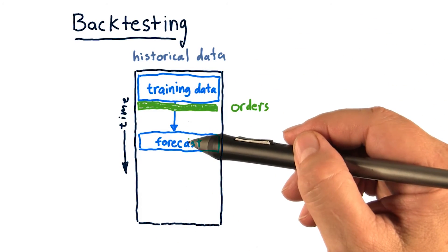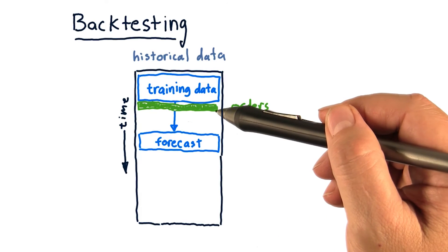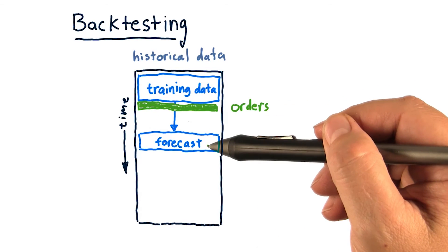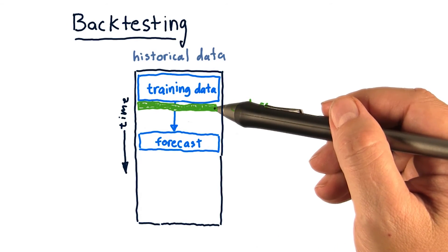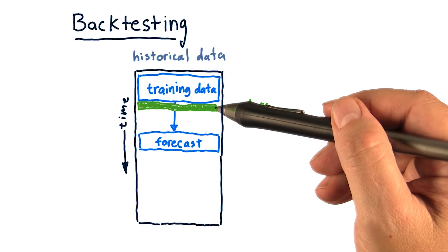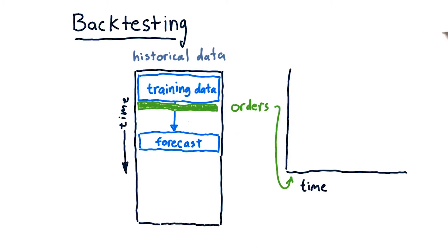On the basis of that forecast, we can then now place orders anticipating that that forecast will be achieved. So we might long some stocks or short them as appropriate. We can take those orders now, put them into our trading simulator, and see how the portfolio works.